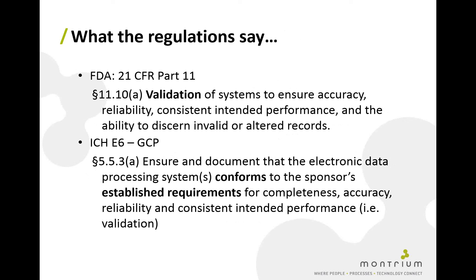There are key regulations we typically use to identify what we need to do in terms of validation and change control. The first is 21 CFR Part 11. Section 11.10(a) basically tells us it's a requirement to ensure validation of systems for accuracy, reliability, consistent intended performance, and the ability to discern invalid or altered records. It's fairly vague, which is why we need a generally accepted industry framework to validate and meet that requirement.